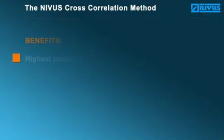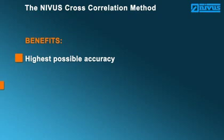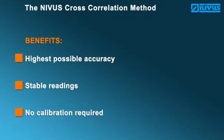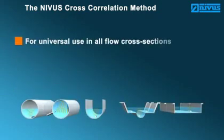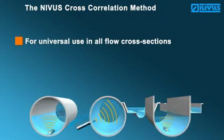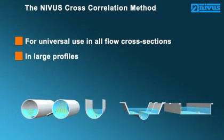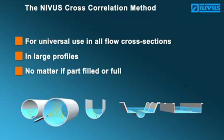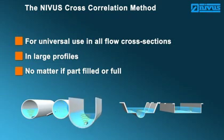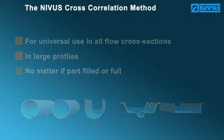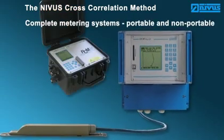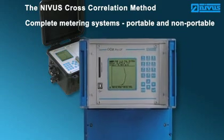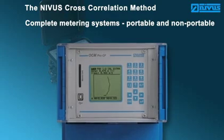The NIVUS cross-correlation method — an overview of the benefits: highest possible accuracy, stable readings, no calibration required. Our measurement system is for universal use in all flow cross-sections, in large profiles, no matter if part-filled or full. Portable and non-portable metering systems are available. NIVUS provides the perfect solution for each application, and our innovative systems stand for highest accuracy and reliability.